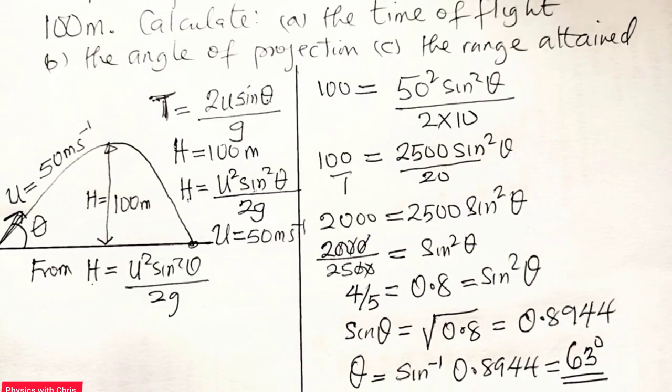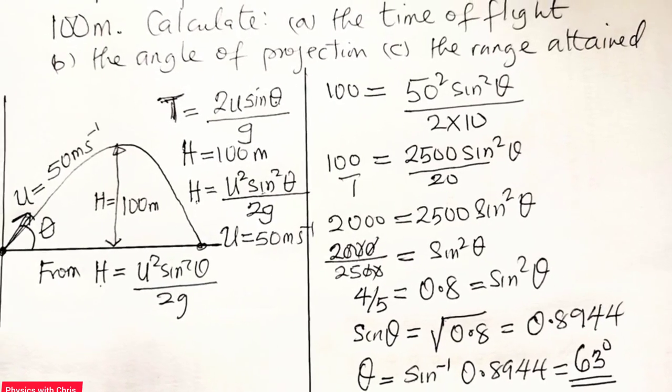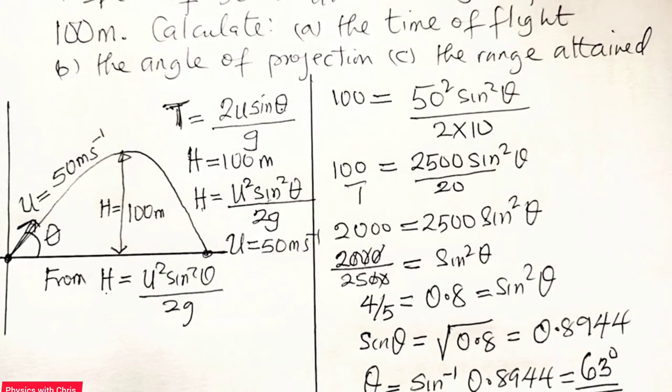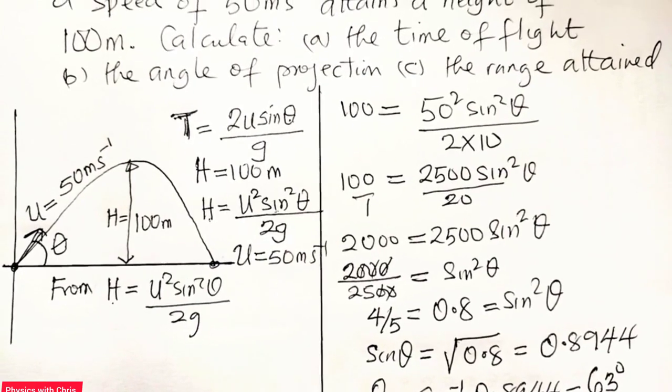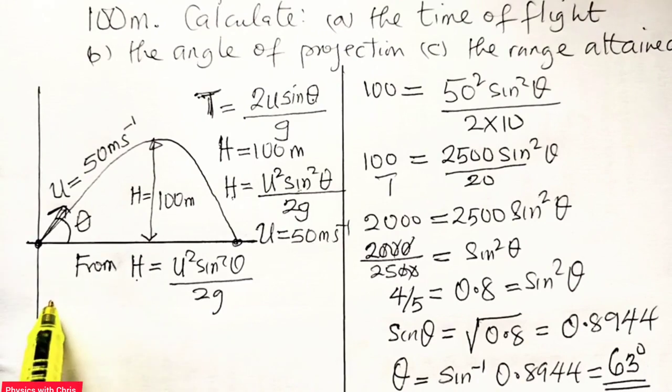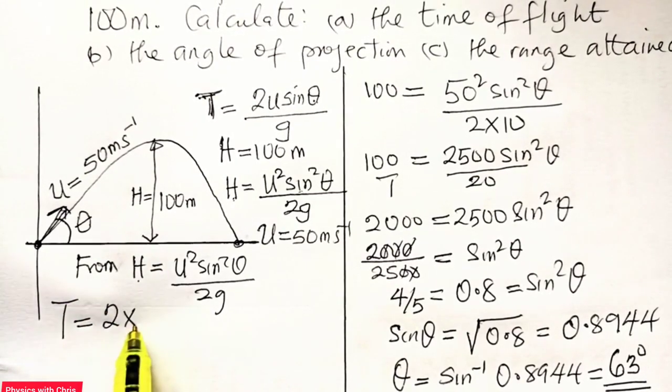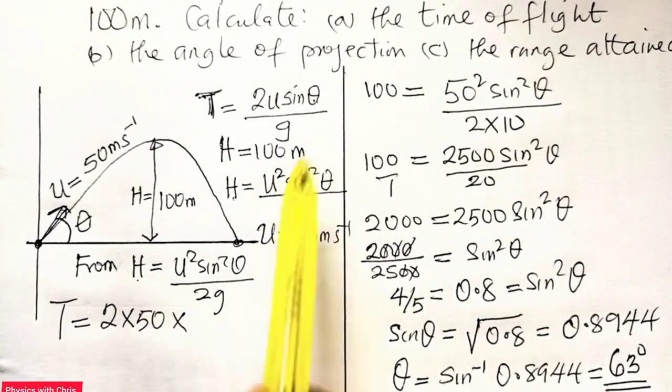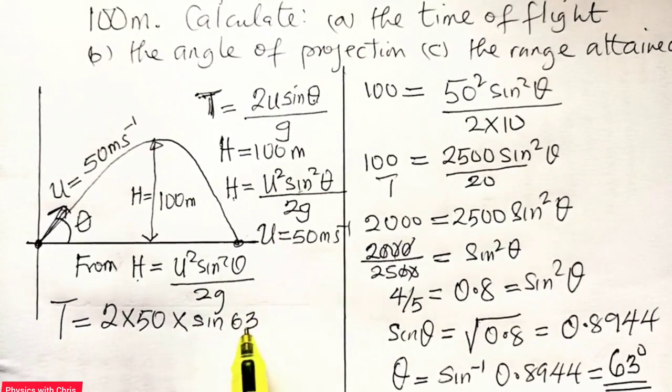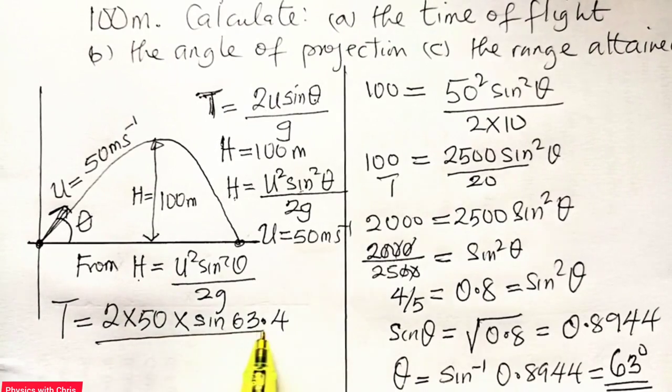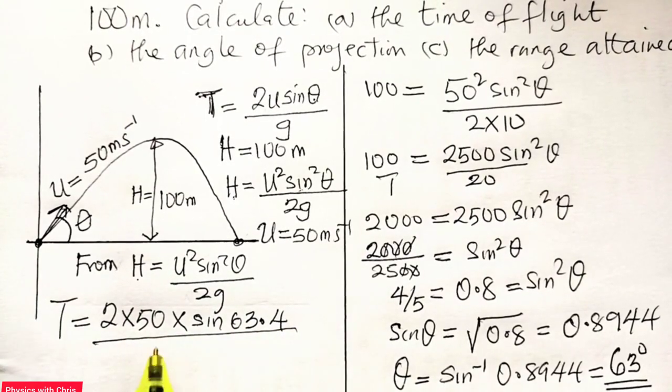We can now come back to input this value into the equation for time of flight to calculate the time of flight for the motion of the stone. So coming back here now, the time of flight is 2 times, from this equation, my U is 50, times sine theta, that is sine 63.4, let me use the complete value to the nearest one degree, divided by 10.